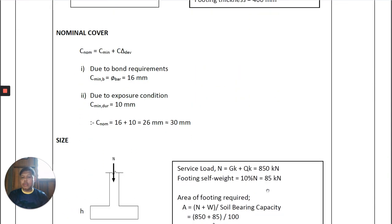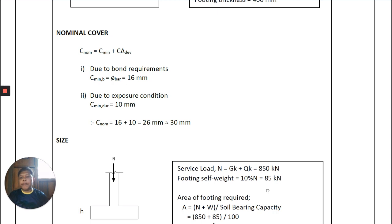For the nominal cover, the first step is to calculate C_nominal, which equals the minimum cover plus the deviation. The deviation is usually 10 mm. The minimum cover is determined based on bond requirements and exposure class — we compare both values, take the highest, then add the 10 mm deviation. The answer is 26 mm, rounded up to 30 mm.